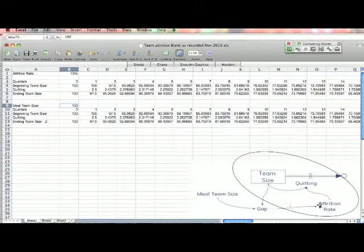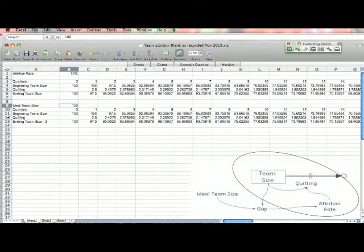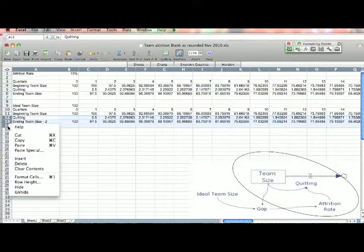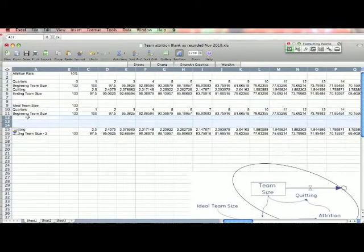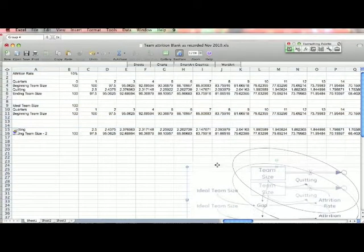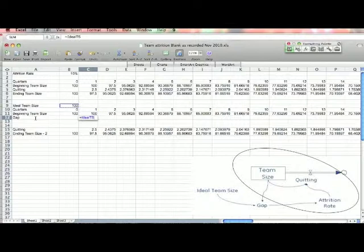So quitting is more complicated, or attrition rate and quitting are more complicated now. Let's add a few rows to address that complication. So we have gap. The gap is calculated as the ideal team size minus the beginning team size. In period one we have no gap.